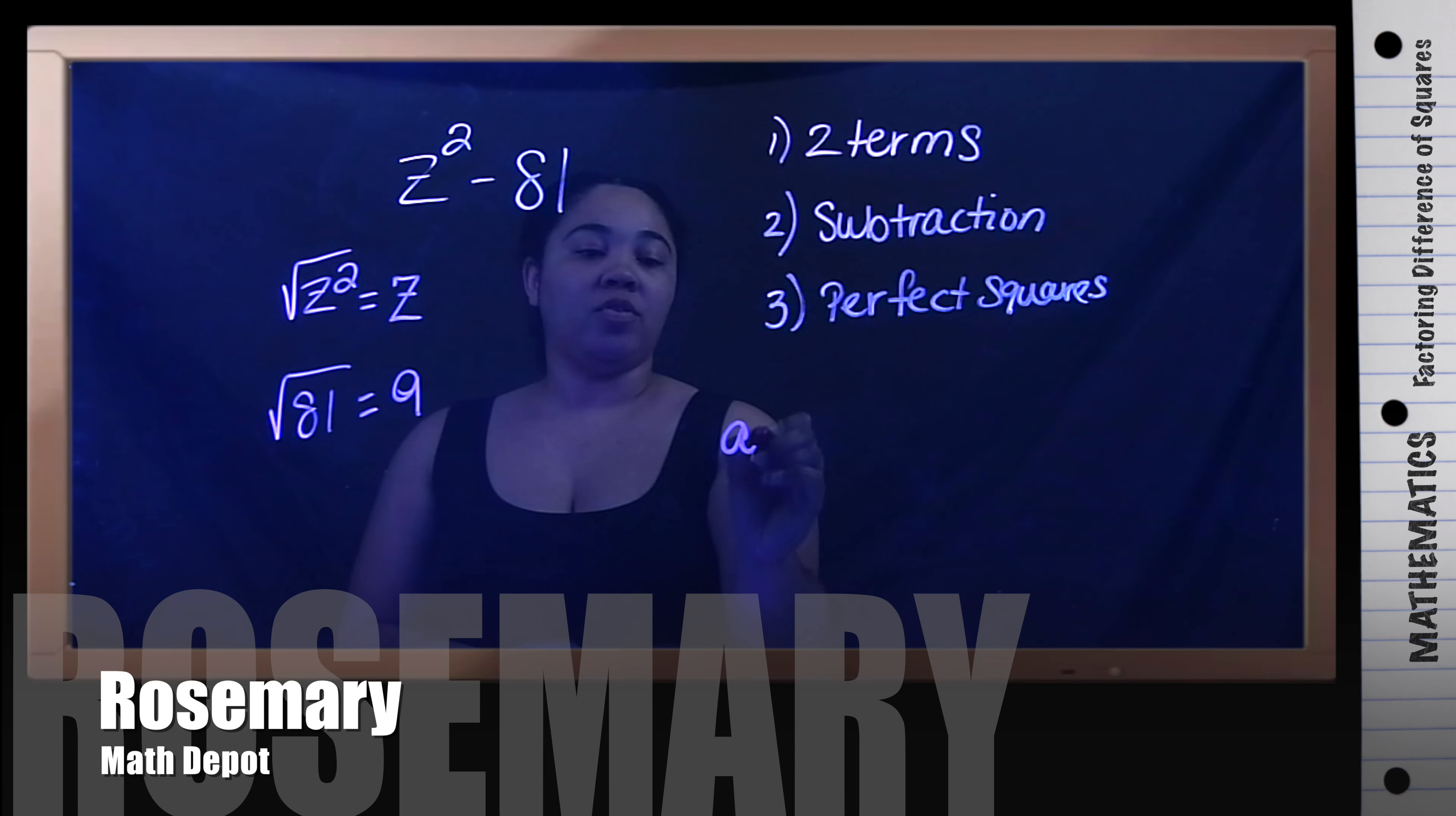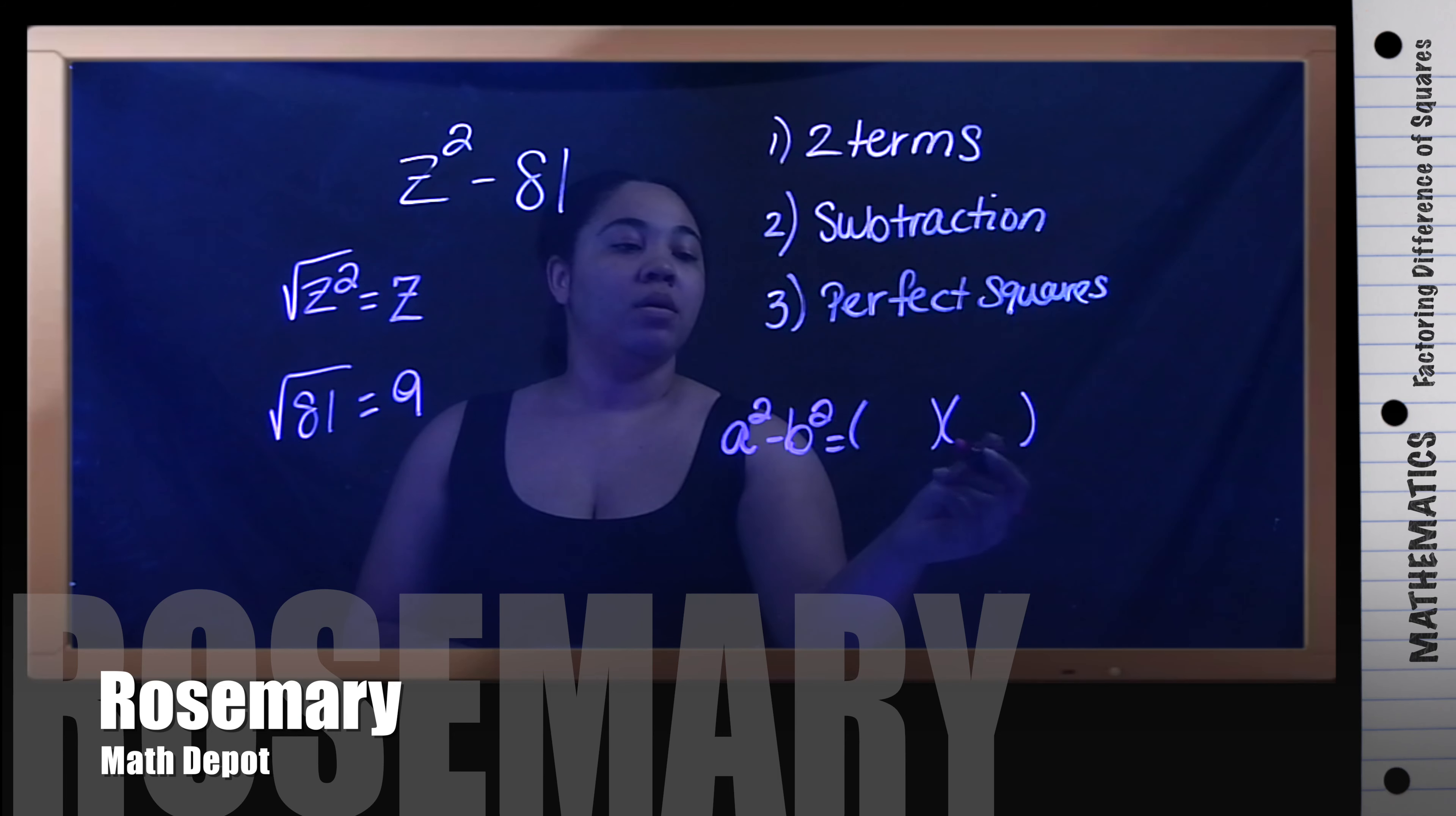When you're doing difference of squares, if it is set up this way, your answer should be two binomials, in which case the terms are like except the signs. One is a minus, one is a plus.